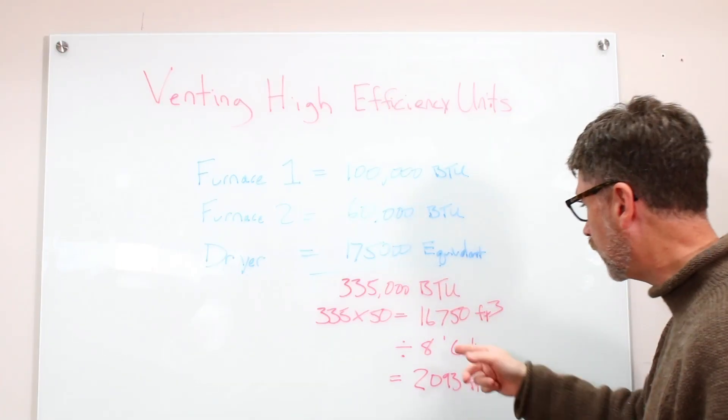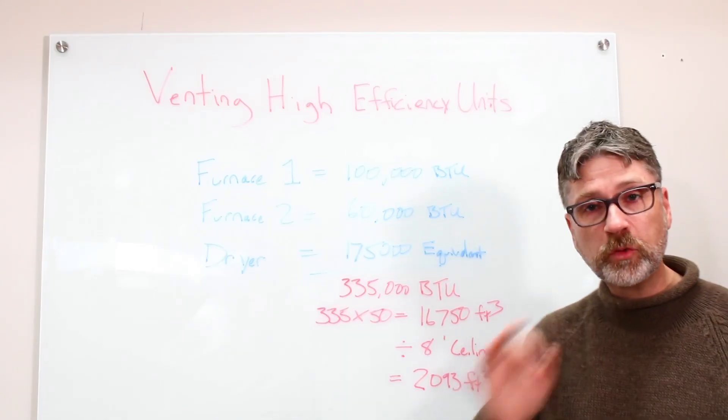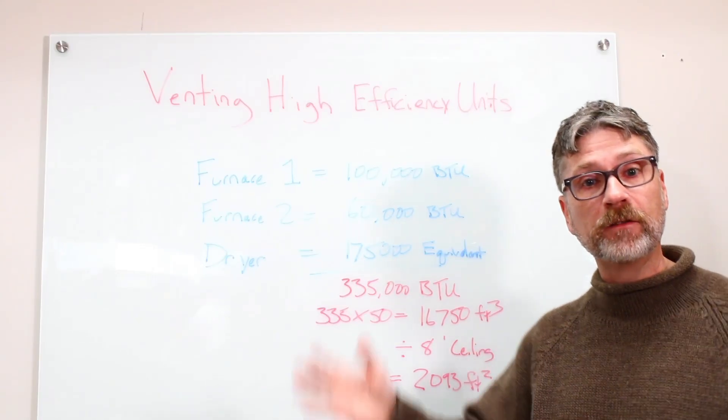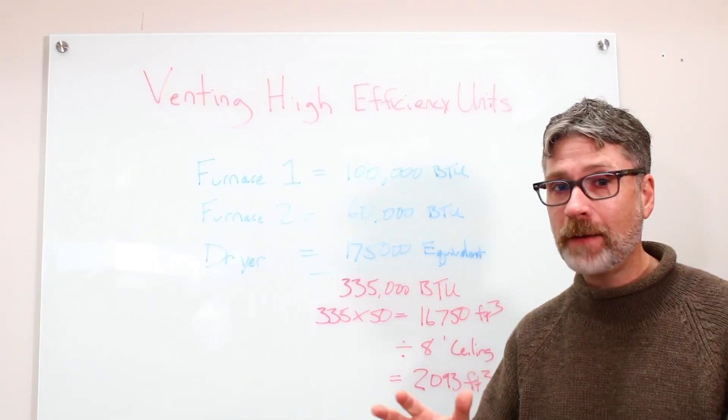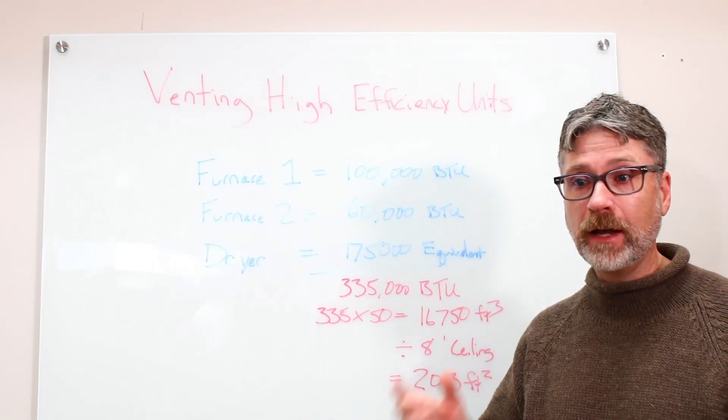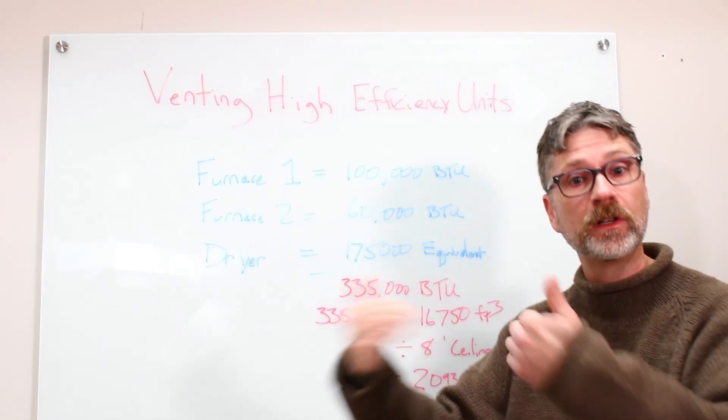Multiply 335 times 50 cubic feet per 1,000 BTU, and we know that we need 16,750 cubic feet. Now, if the ceiling in that area was eight foot, divide by eight, now we have almost 2,100 square feet of free area required to run those three appliances. If it's not that big, and it wasn't, then what you need to do is pipe the combustion air on those furnaces from outside.